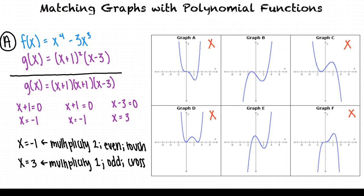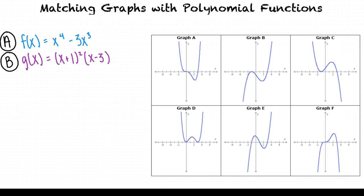Knowing this, we can eliminate graph E because it doesn't feature these characteristics. Additionally, we notice that graph B meets all of these qualities. So to summarize, graph A corresponds to our first function f(x) equals x to the fourth minus three x cubed, and graph B corresponds to our second function g(x) equals the quantity x plus one squared times the quantity x minus three.